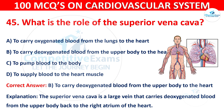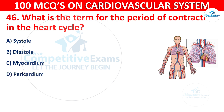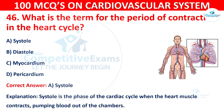Question 46: What is the term for the period of contraction in the heart cycle? Options are: Systole, Diastole, Myocardium, or Pericardium. The correct answer is A, Systole. Systole is the phase of the cardiac cycle when the heart muscle contracts, pumping blood out of the chambers.